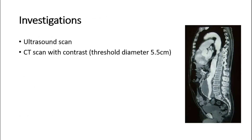In the routine outpatient setting, any suspected AAA should be initially investigated by an ultrasound scan. Once an ultrasound scan has confirmed the diagnosis, a follow-up CT scan with contrast is needed when a threshold diameter of 5.5 cm is reached. This provides more anatomical detail to determine suitability for endovascular procedures. This picture is a CT scan showing the abdominal aortic aneurysm.